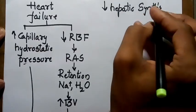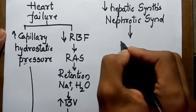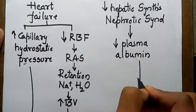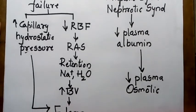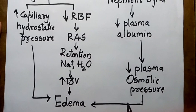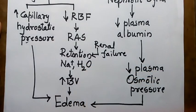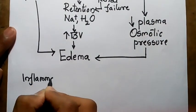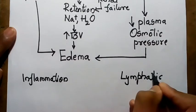Decreased hepatic synthesis of protein, as in nephrotic syndrome, causes a decrease in plasma albumin, leading to decreased plasma osmotic pressure and thus edema. Even in renal failure, there will be retention of sodium and water, also causing edema. Edema also occurs in inflammation and in lymphatic obstruction.